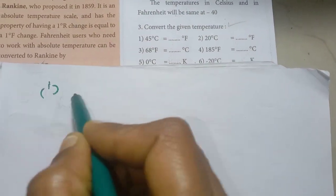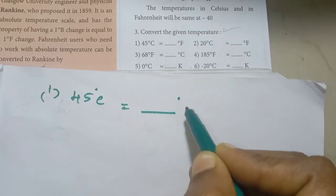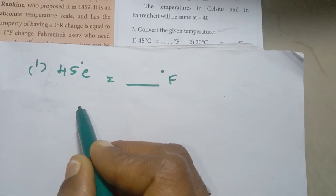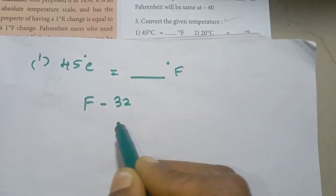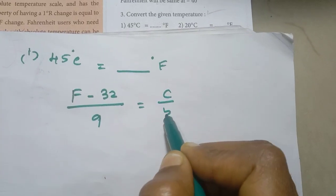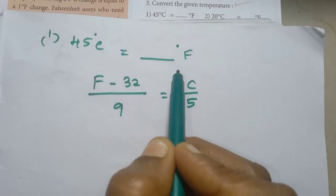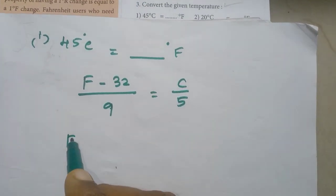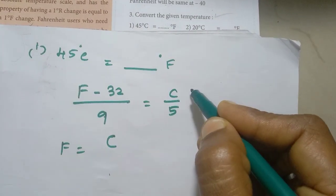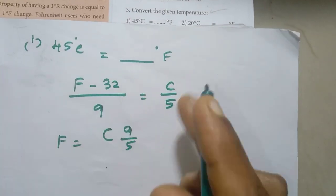First problem: 45 degrees Celsius equal to how many Fahrenheit? The formula is: F minus 32 divided by 9 equals C by 5. To find Fahrenheit, F equals 9 by 5 into C, then minus 32.